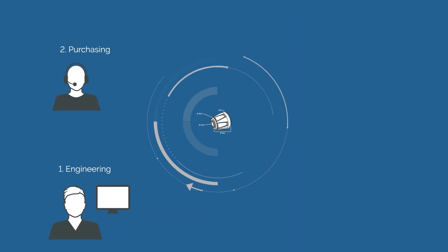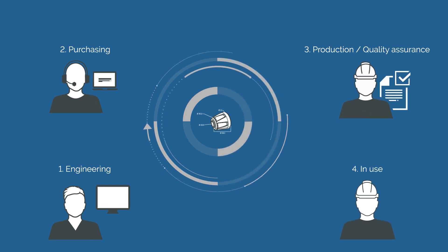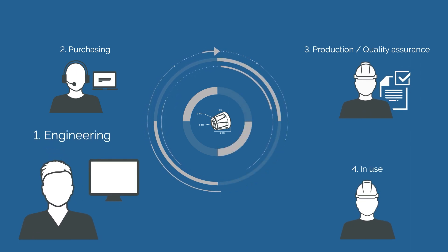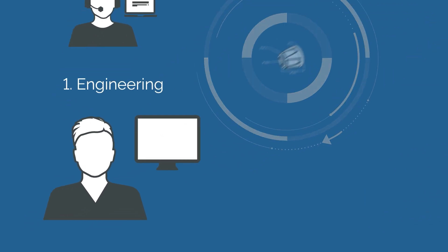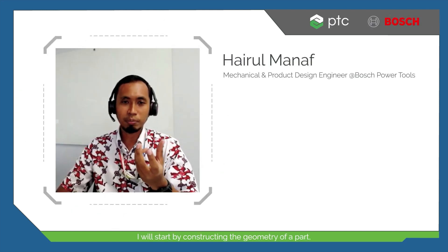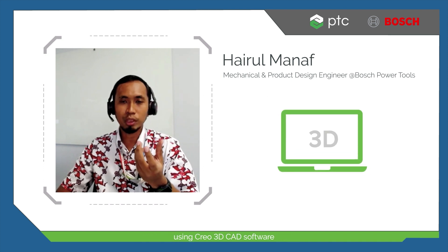Back to the development of the plastic housing of the cordless screwdriver. The first step is the product design. So far, this is a laborious process for everyone involved. To create a part, I will start by constructing the geometry using CREO 3D CAD software.